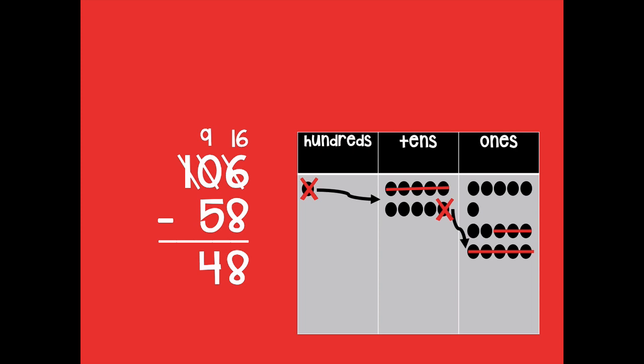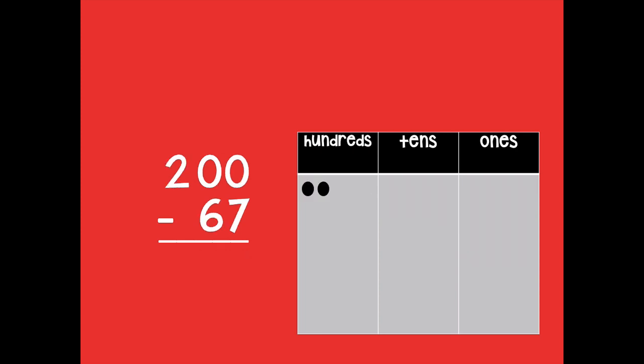Then I can move into my tens place. 9 minus 5 equals 4, and then there's nothing to subtract in the hundreds, so 106 minus 58 equals 48. All right, so now is where you guys are gonna get your chance to do some work. So grab your dry erase board or your paper and pencil and write down 200 minus 67.